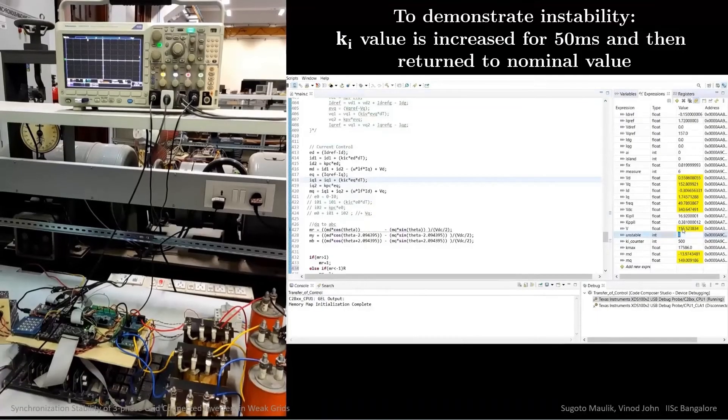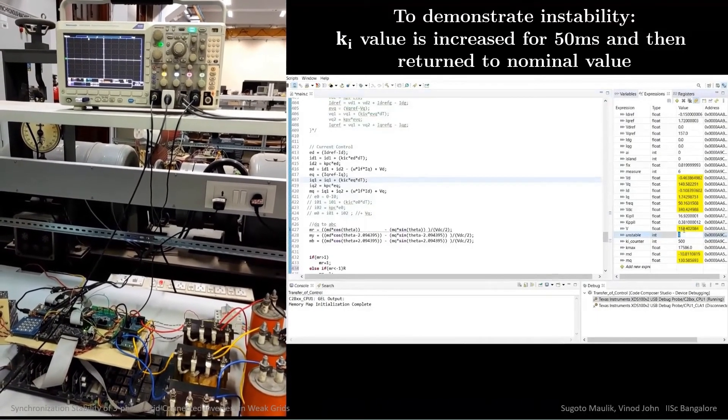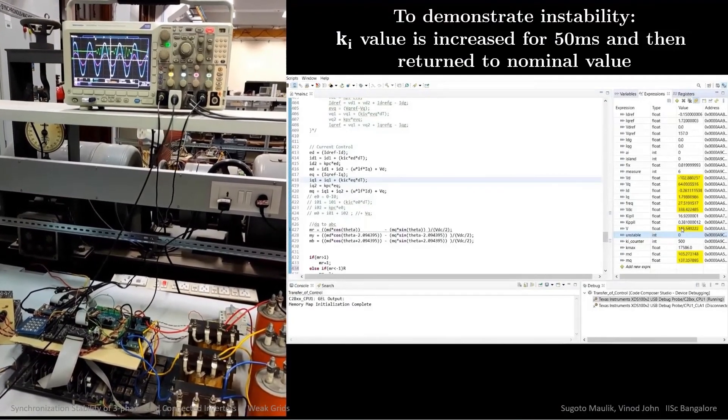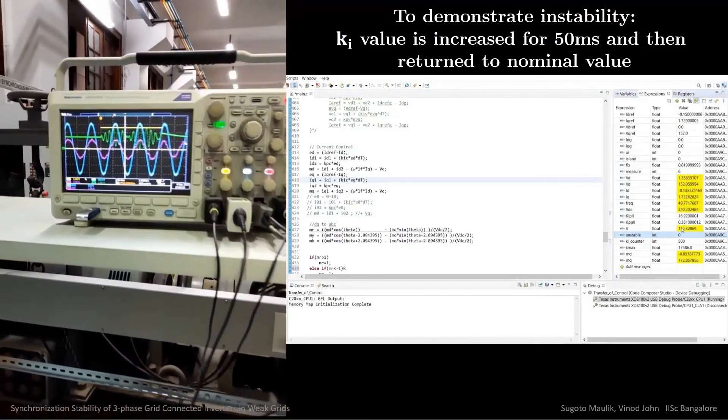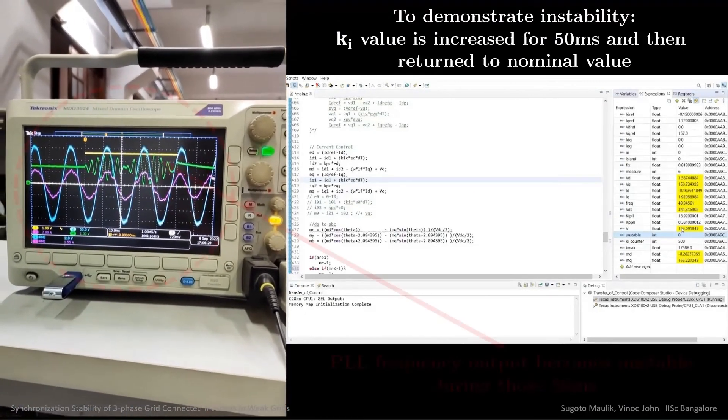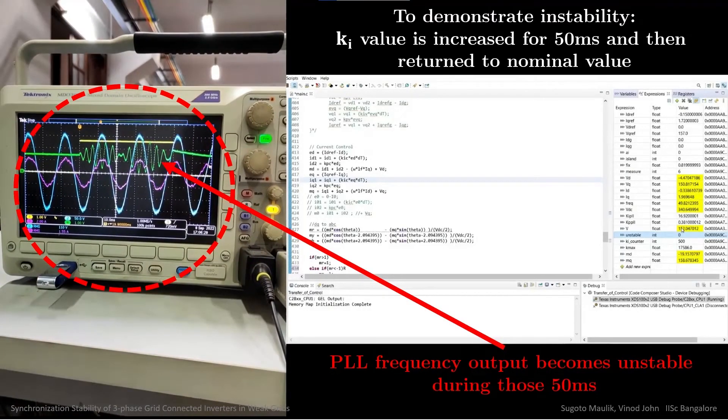For real-time demonstration of this instability, the PLL's KI value is increased for 50 milliseconds while the converter is running in grid feeding mode. The destabilizing impact of this increased KI is evident from the oscilloscope plot of the frequency output.